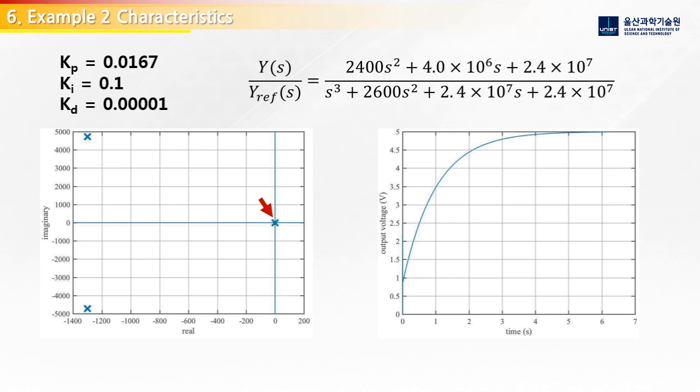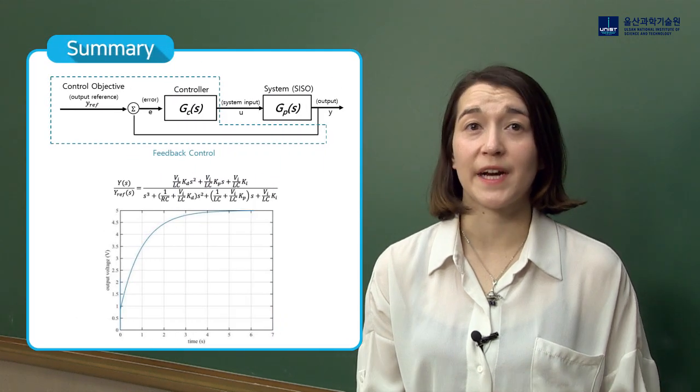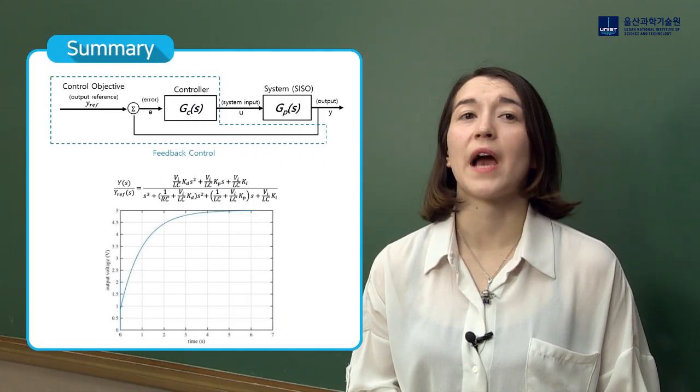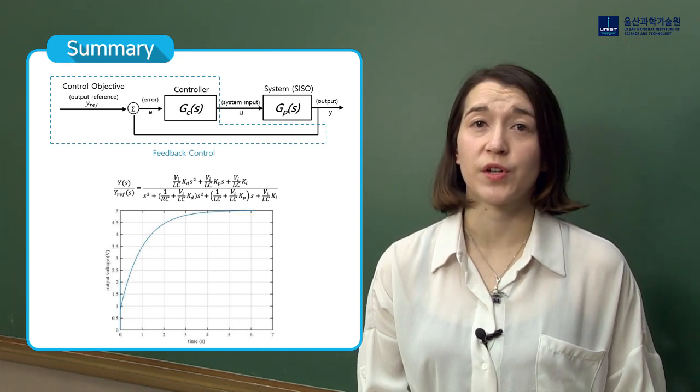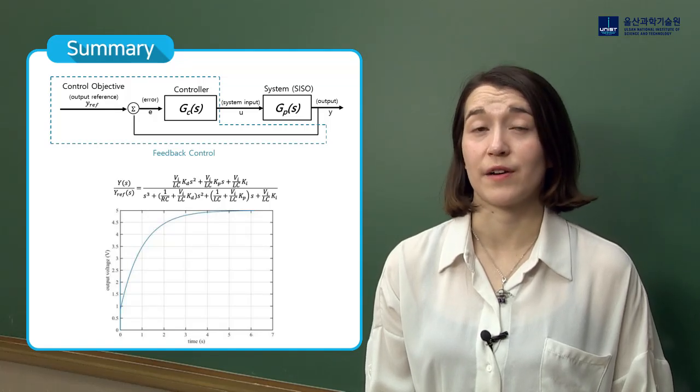So, you need to pick your control values very carefully. In this video, we have shown how to apply a PID controller as feedback for a buck converter to keep the output voltage at five volts. The control variables should be chosen to ensure the system is stable and the target performing characteristics are met.